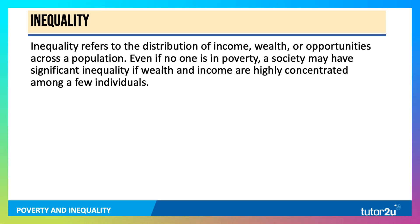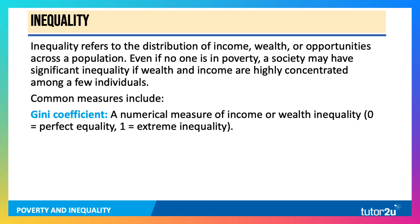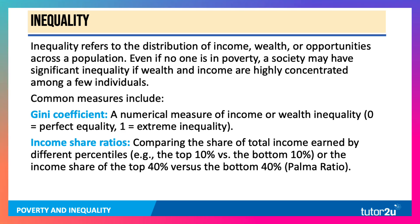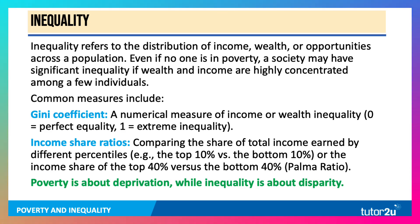Inequality is a related concept, particularly when we think about relative poverty. It refers to the distribution of income or wealth, or both, or opportunities across a population. So even if no one is in extreme poverty, a society can still have significant inequality if the distribution of income or wealth is highly concentrated amongst a few individuals. The most widely used measure of income and wealth inequality is the Gini coefficient, with zero reflecting perfect equality and one — or 100 if indexed — reflecting extreme inequality. We also use income share ratios, comparing the share of total income of different percentiles, such as the top 1% versus the bottom 10%. Or the Palma ratio, which is the income share of the top 10% versus the bottom 40%. Poverty is essentially about deprivation, and inequality is about the skewed disparity between rich and poor.